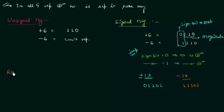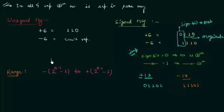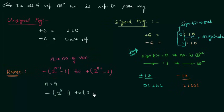Now the range of signed magnitude: the range is from minus 2 raised to the power n minus 1, minus 1, to plus 2 raised to the power n minus 1, minus 1, where n is the number of bits. For 4 bits, n equals 4, so we have minus 2 raised to power 3 minus 1 to plus 2 raised to power 3 minus 1. Since 2 raised to power 3 is 8, and 8 minus 1 is 7, the range is minus 7 to plus 7.